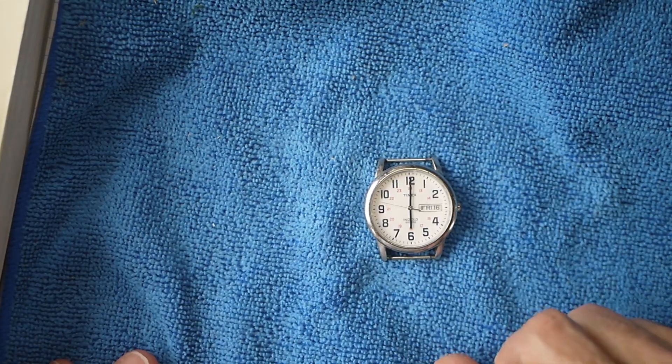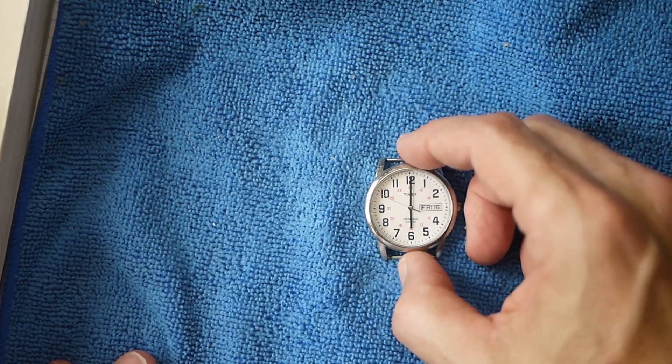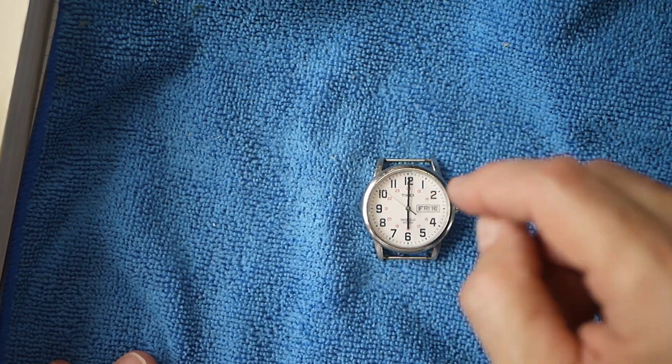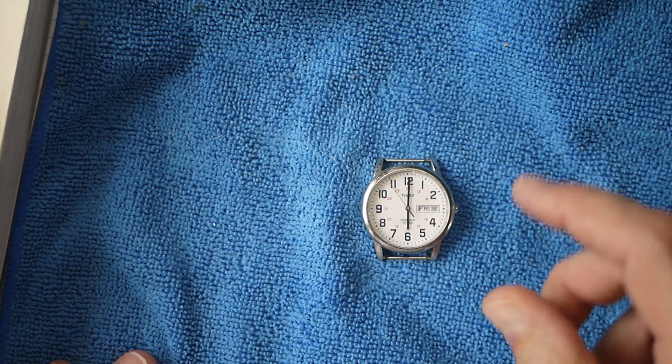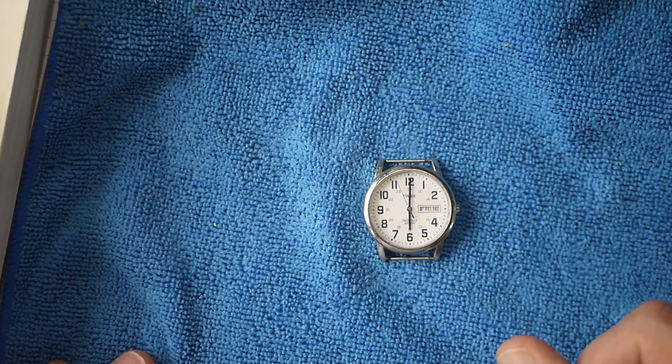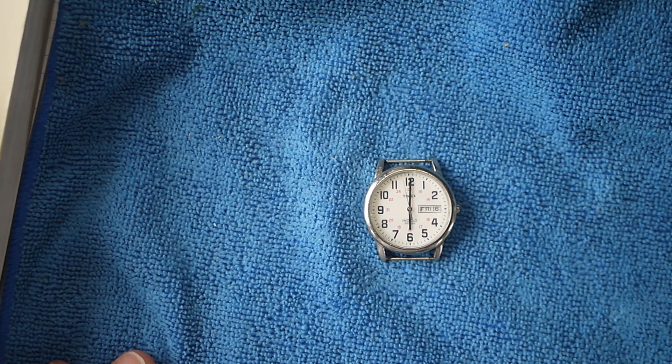So guys, that's just a quick one. How we set this analog watch with a date function. Go the day before, then the number date before, and then set your time to get that a.m. p.m. right and roll it around. So that's all we have for today, guys. Thanks for watching.